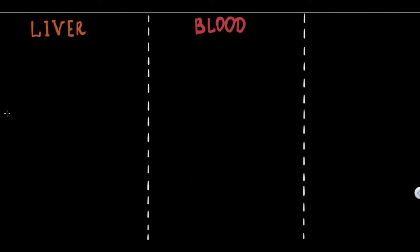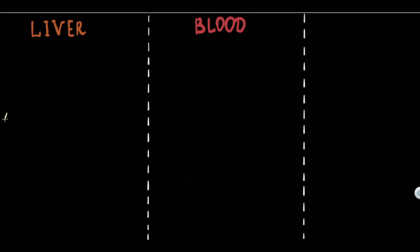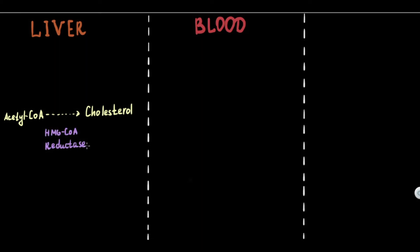Circulating plasma levels of cholesterol are derived from two primary sources. The first is cholesterol production in the liver from acetyl-CoA, where the rate-limiting enzyme is HMG-CoA reductase.